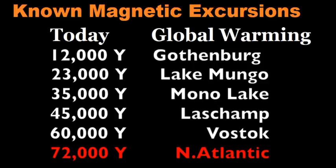Now, in the last decade, we now know that magnetic excursions happen quite regularly. There's one happening right now. The last major excursion was the Gothenburg 12,000 years ago. Lake Mungo, prior to that, 23,000 years ago. The Mono Lake at 35,000. The Le Champ at 45,000. Vostok at 60,000. And the North Atlantic Anomaly at 72,000.